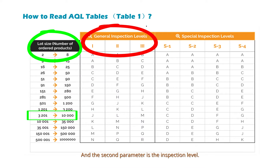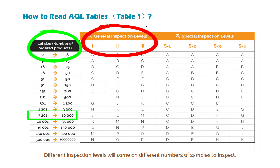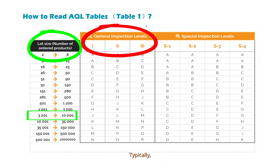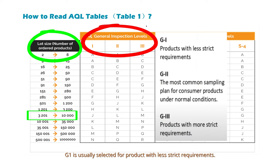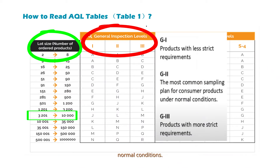The second parameter is the inspection level. Different inspection levels will require different numbers of samples to inspect. Typically, there are three levels: G1, G2, and G3. G1 is usually selected for products with less strict requirements. G2 is usually selected as the most common sampling plan for consumer products under normal conditions. G3 is usually selected for products with more strict requirements.